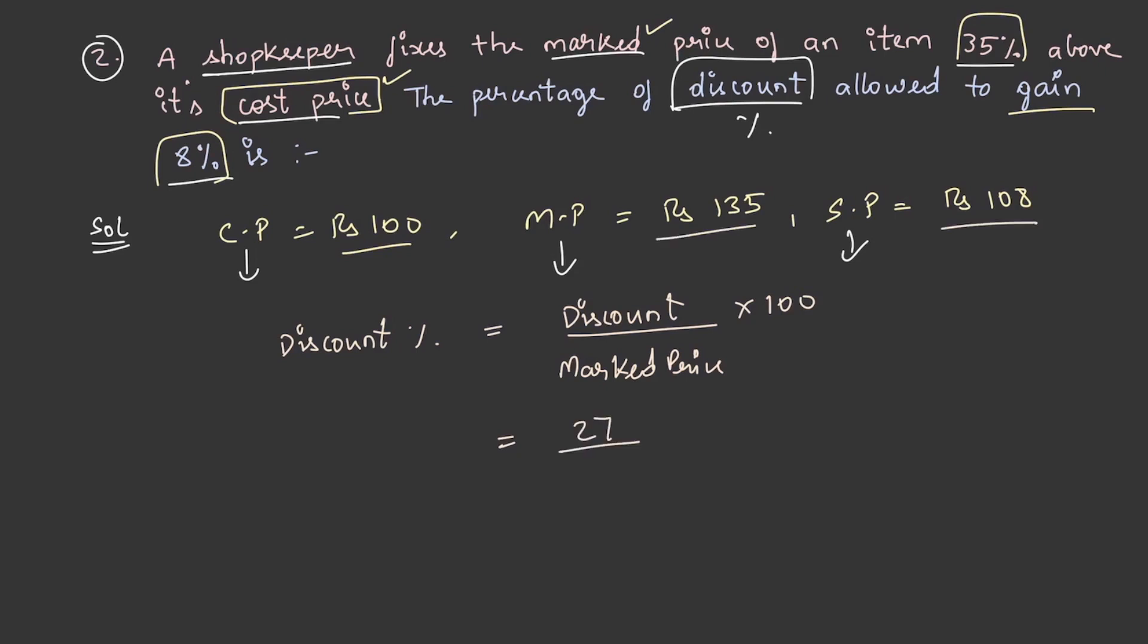By the marked price 135 into 100, so this percentage will be equal to 20 percent. So the percentage of discount allowed to gain 8 percent is 20. We are done with the discount concept.